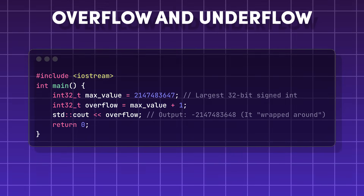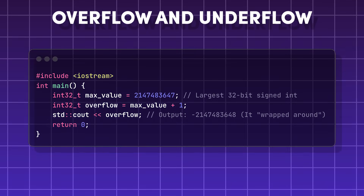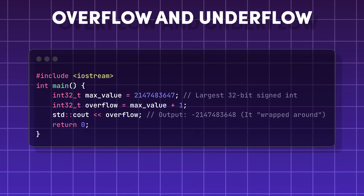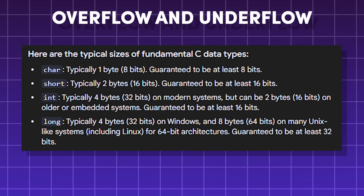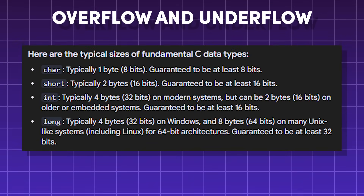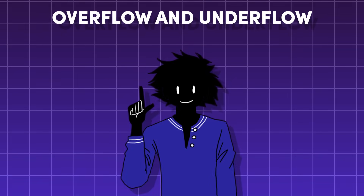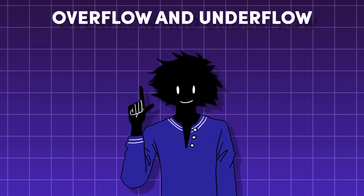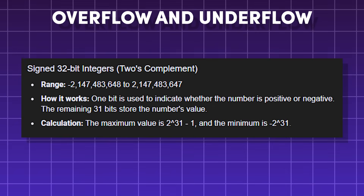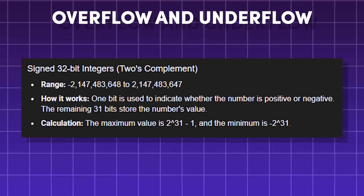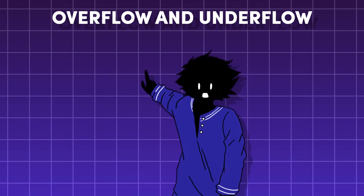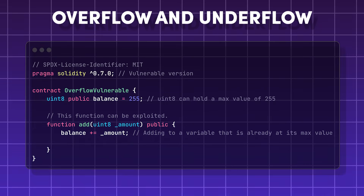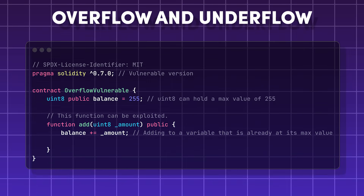Overflow and underflow. These happen when a calculation results in a number that is either larger or smaller than what the program can handle. This is because data types have a fixed size in memory — a 32-bit integer has a maximum value of 2,147,483,647. This memory limit must be kept in mind, especially when coding smart contracts.